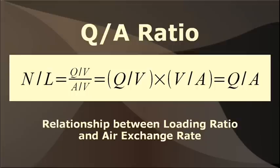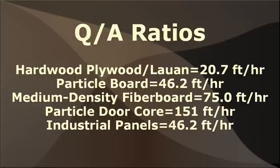ASTM D6007 allows for different loading ratios and exchange rates to help accommodate different samples and chamber sizes to provide quality results and equivalency to the large chamber test. Instead of specifying a loading ratio, ASTM D6007 uses a combined term called the QA ratio for different product types.